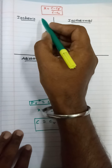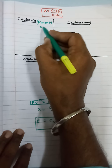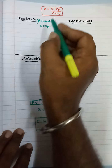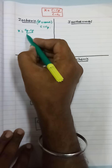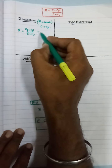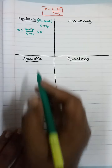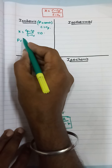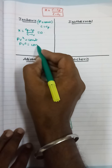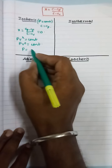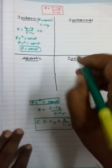Let us first see what isobaric is. In an isobaric process, pressure is constant, so P equals constant. That means C will be equal to CP. When you substitute into the equation, X equals (CP minus CP) by (C minus CV), which equals 0. By the polytropic relation, PV power X equals constant becomes PV power 0 equals constant, or simply P equals constant. This is the relation for the isobaric process.